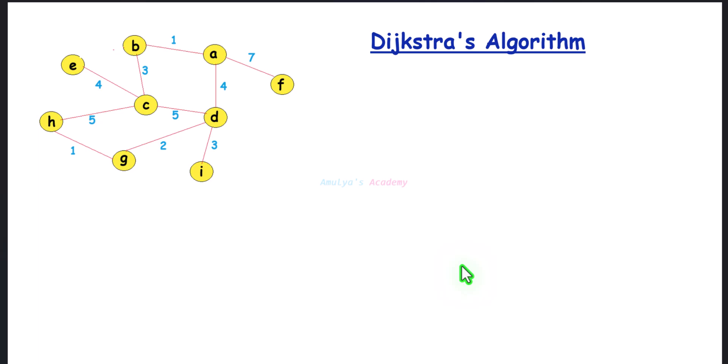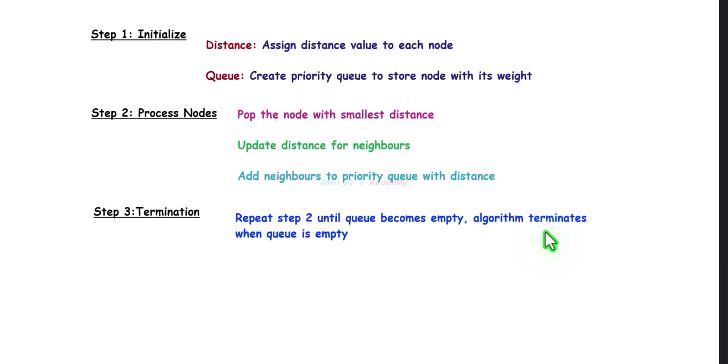Let's see how this algorithm works. In this algorithm we find the shortest path or distance from a source node to all other nodes in the graph. The first step is initialization: assign a distance value to each node. The distance of the source node is zero, and for all other nodes take the distance as infinity. Then create a priority queue to store the nodes with their distances.